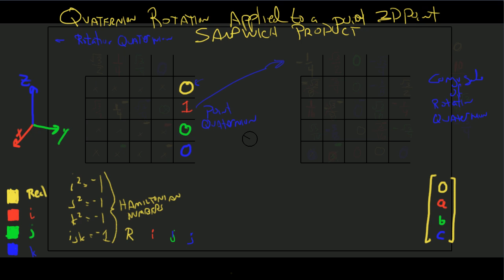That's why it's called the sandwich product — you have the rotation quaternion here, the conjugate over here, and there you have it. Mapping, mathematically or conceptually, is a one-to-one correspondence between things. When we talk about mapping from the real 3D world to this imaginary 3D world, it shouldn't throw you, because in standard engineering notation you have i-hat, j-hat, and k-hat — the unit vectors in the x, y, and z direction.